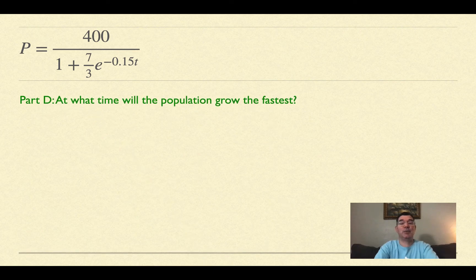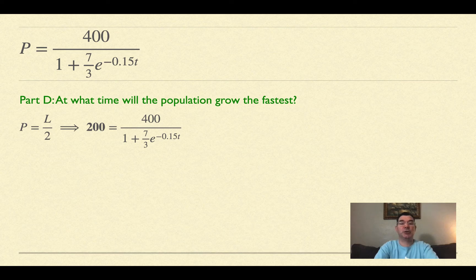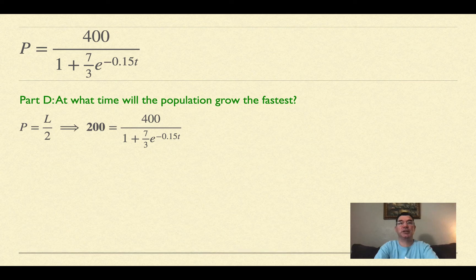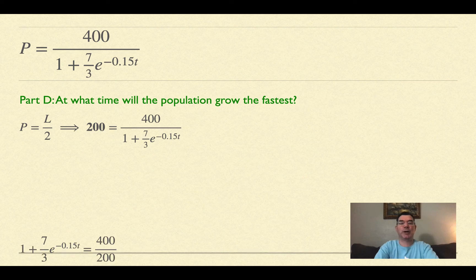Part D: at what time will the population grow the fastest? The population grows fastest when it's at half the carrying capacity. The carrying capacity was 400, so 200 equals the right-hand side. I'm solving again, flipping both sides and multiplying by 400.